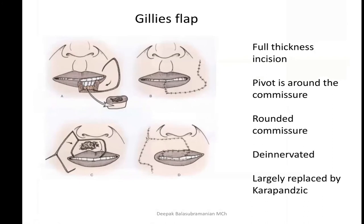The Gillies flap can be used for midline defects — it is a full thickness incision that pivots around the commissure, usable for both upper and lower lips. It also results in a more rounded commissure. The problem with the Gillies flap is that because it is a through-and-through incision, it is a de-innervated flap — there is no sensation on the lip or commissure — and it has largely been replaced by the Karapandzic flap.